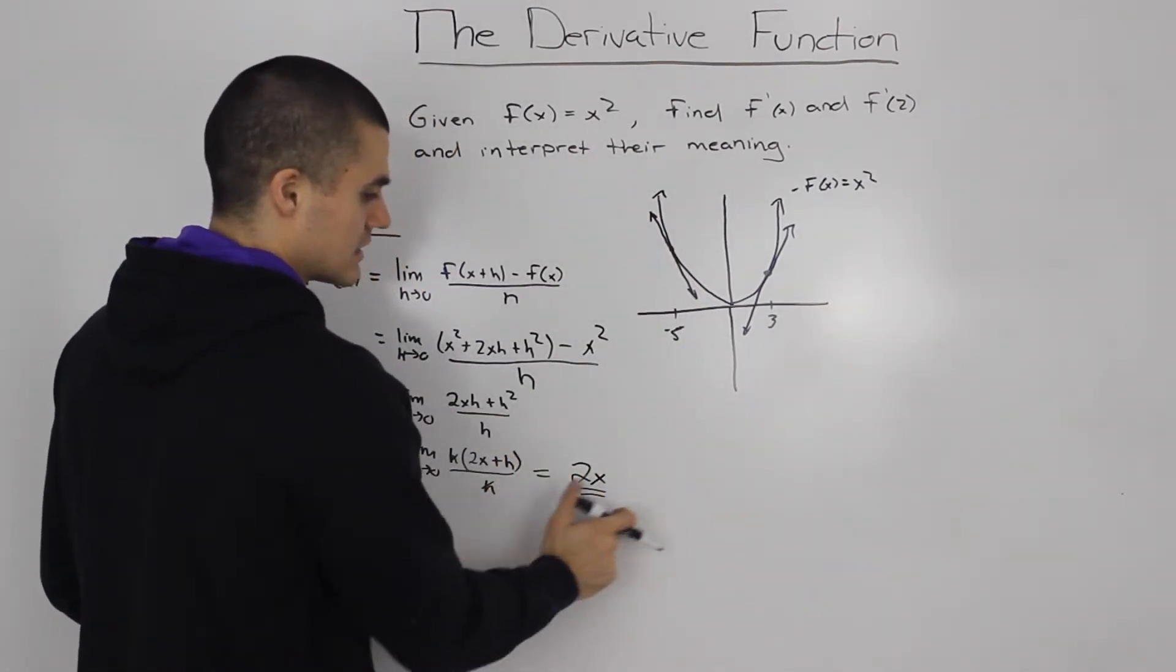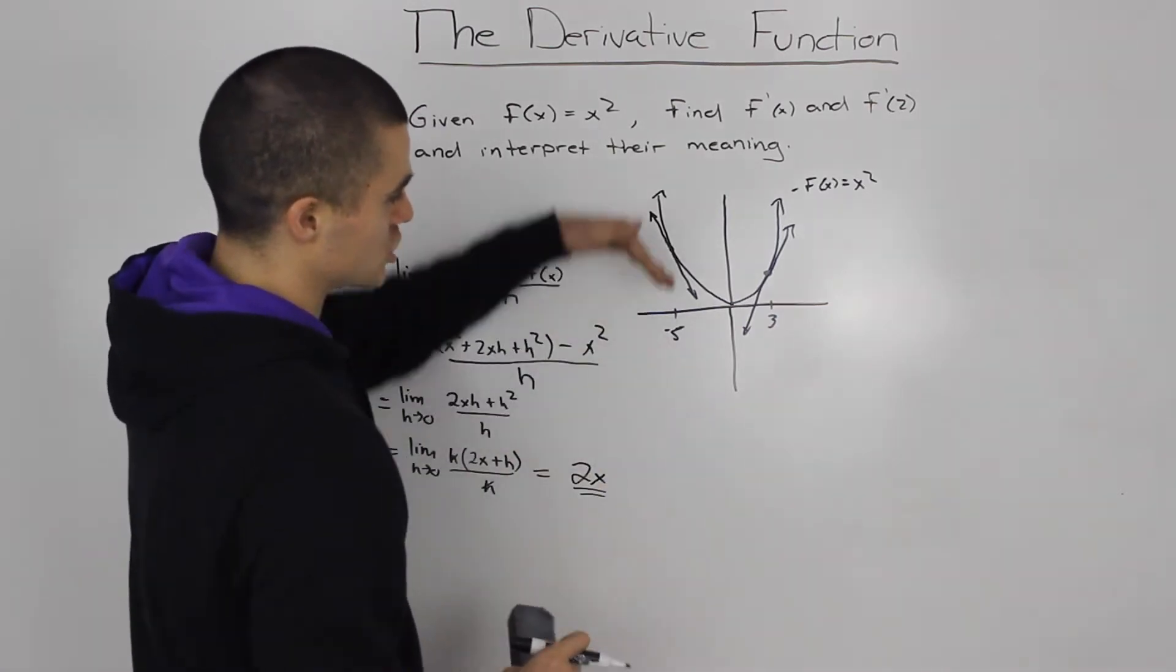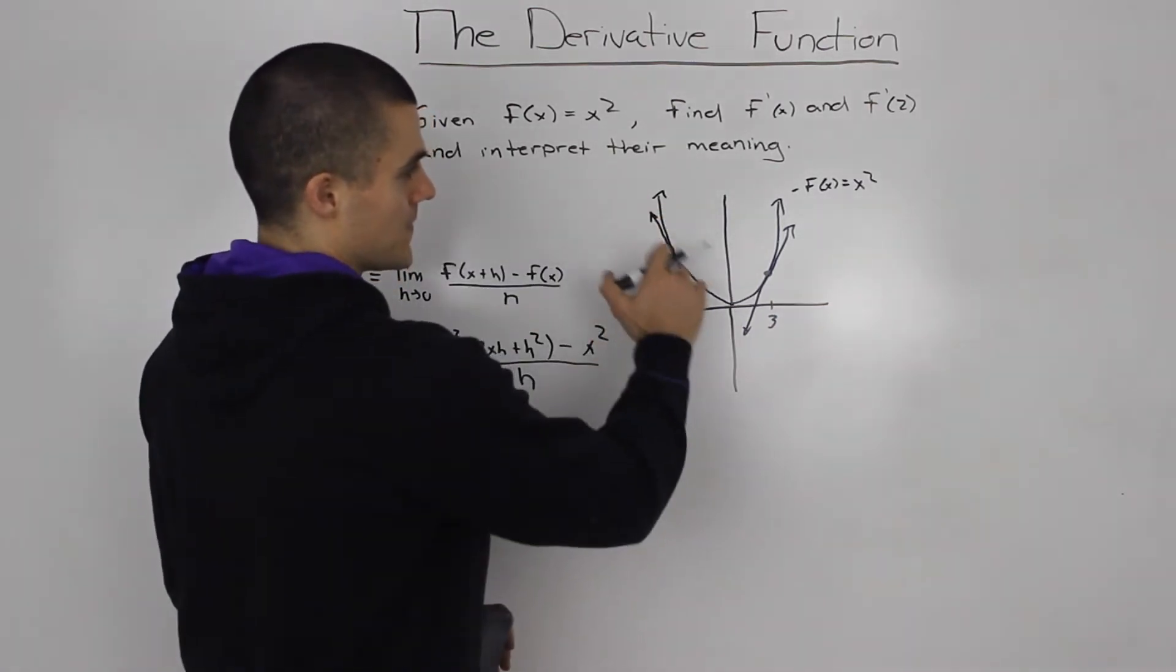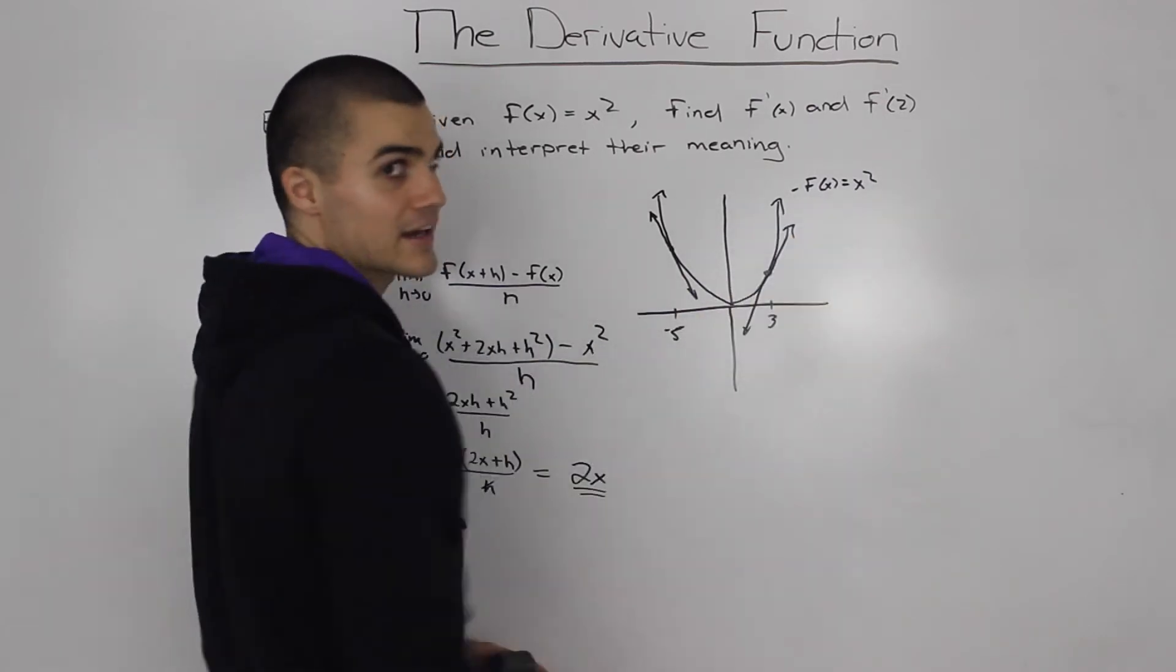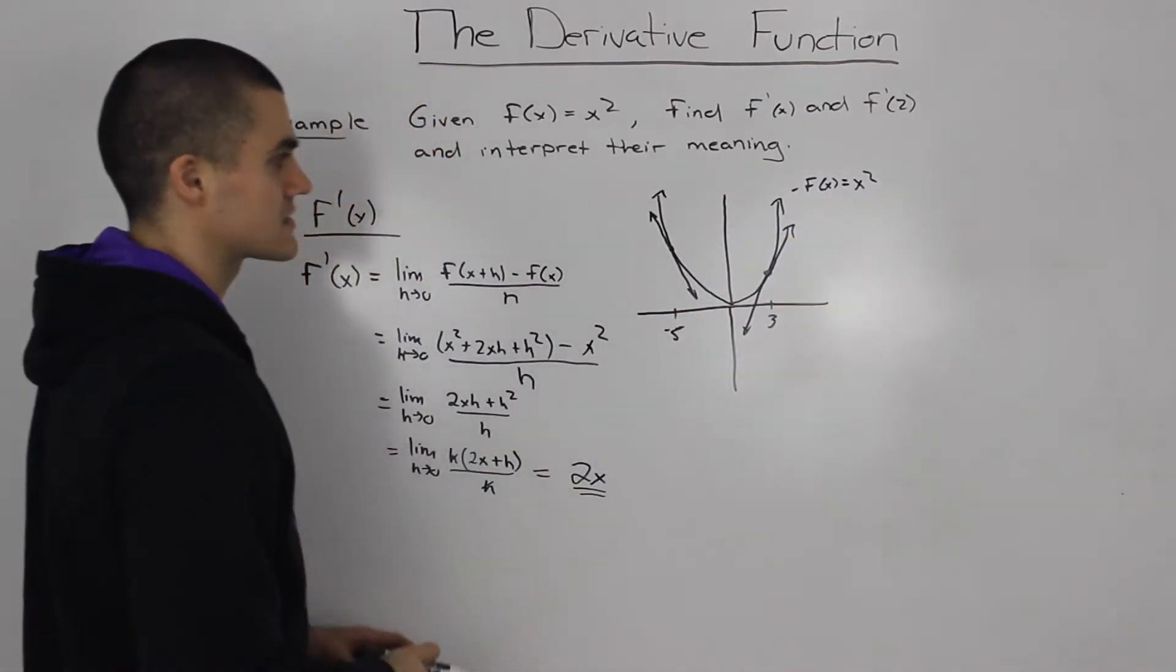So, basically, this function is giving you the slope of the tangent at any point x of x squared. So, that's what it means.